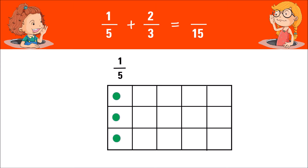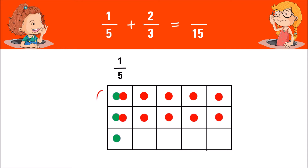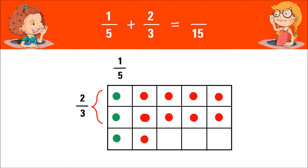Then fill two of the other rows with red chips to represent two thirds. For those boxes with both green and red chips, move the red chips to empty boxes. Now the boxes with green and red chips will be the sum and our new numerator.